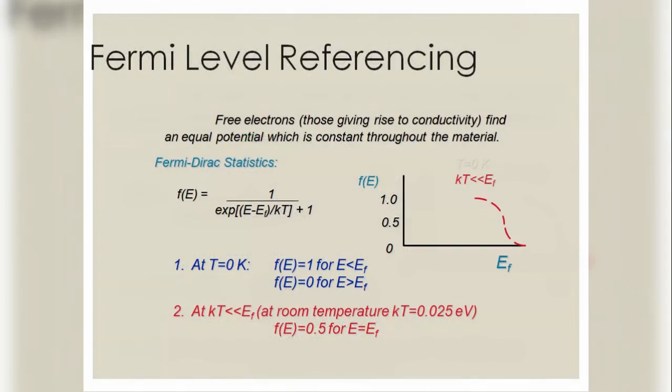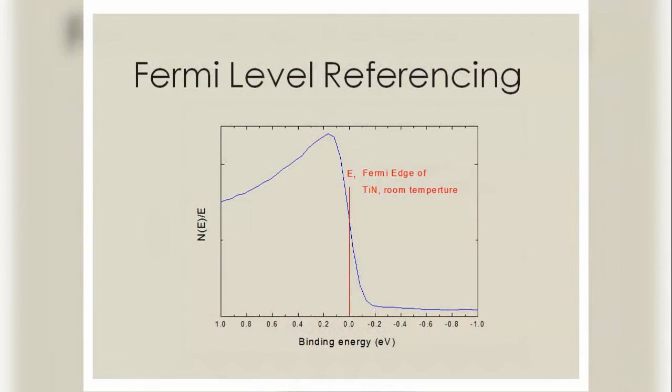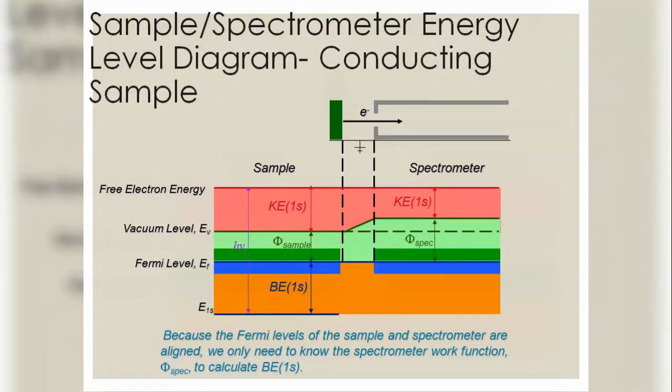So now let us see about the Fermi level referencing. The Fermi level of free electrons finds an equal potential which is constant throughout the material. Sample energy level diagrams are shown for conducting samples and insulating samples.